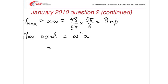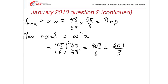So, again, putting the values in, 5π over 6 squared, times 48 over 5π, and that tidies up to give, and what does it tidy up to give, 40π over 6, or 20π over 3, we can leave it like that, that's it.